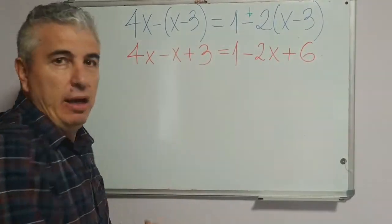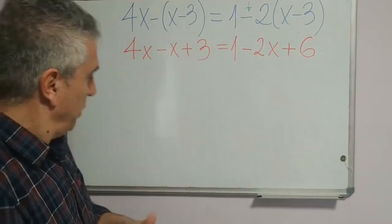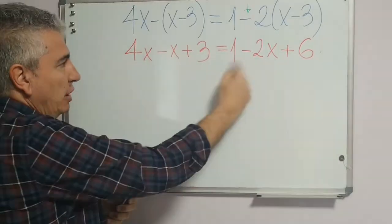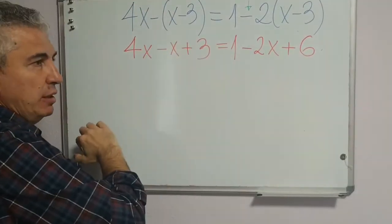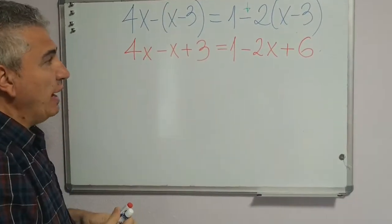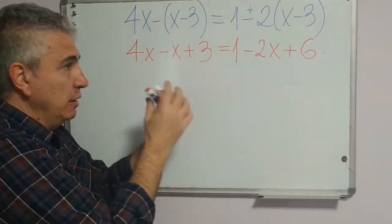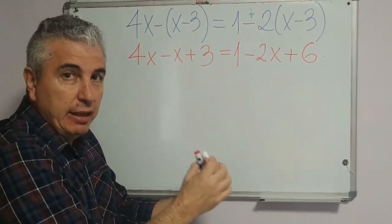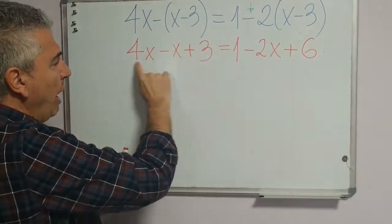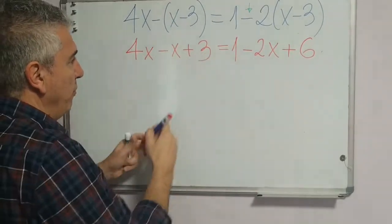Now we have an ordinary equation without brackets. Our next step is to move x terms to the left and numbers to the right. We do this by adding or subtracting the same value to get an equivalent equation. We don't want the number plus 3 on the left side.